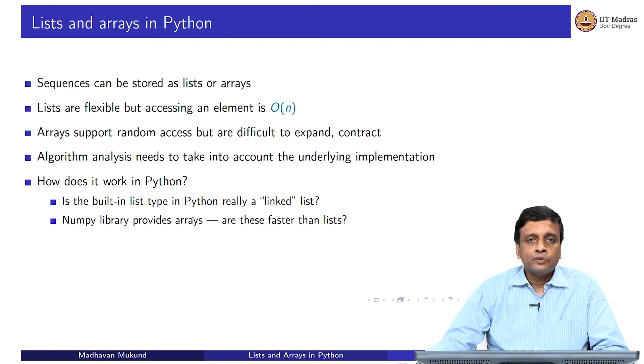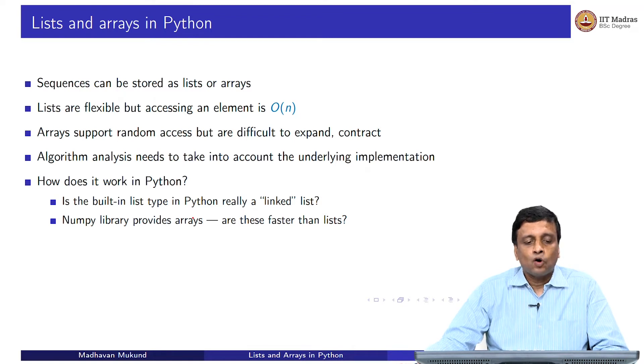We saw that sequences can be stored either as lists or as arrays. Lists are flexible, you can insert and delete items in the middle of a list quite easily. But getting to the ith element takes time proportional to i. In general, if I have to walk across a list to get to the nth element, it will take me order n time.